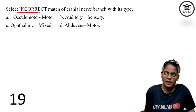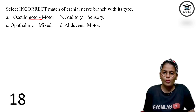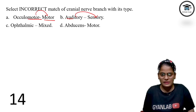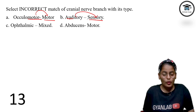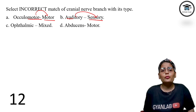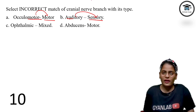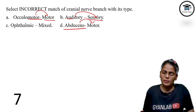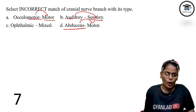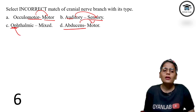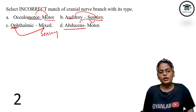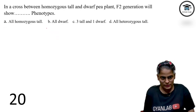You need to find the incorrect match regarding cranial nerves. Oculomotor is a motor nerve — correct. Auditory nerve is a sensory nerve — correct. Abducens is also a motor nerve — correct. But ophthalmic is a sensory nerve, not a motor nerve as might be listed. So option number C is the wrong answer.